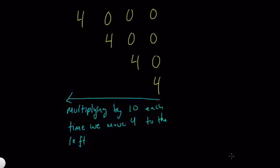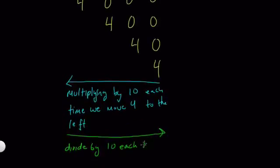And what happens as I move 4 to the right? Well, the opposite happens. If I start with 4,000, and move my 4 once to the left, I get 400, which is 10 times smaller. And then another 10 times smaller than 40, and 10 times smaller than 4. So here, I could say, I divide by 10 each time we move 4 to the right.